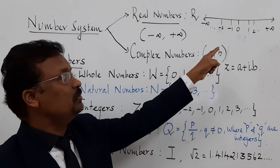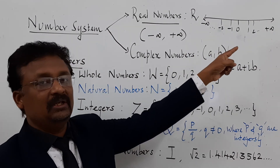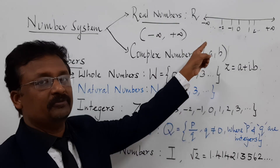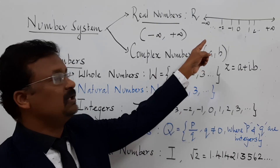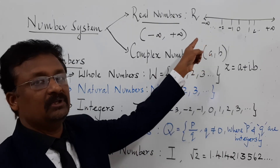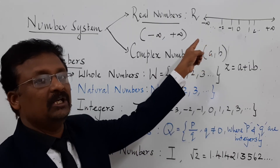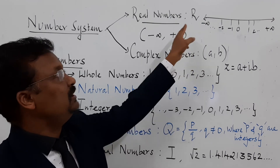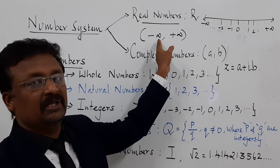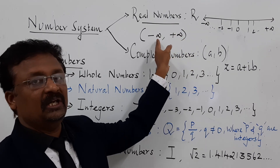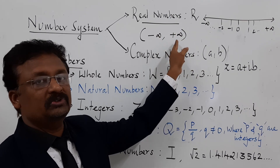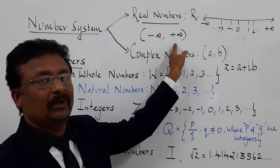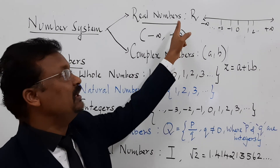On the real axis, to the right of 0 we have 1, 2, 3, 4 up to positive infinity, and to the left of 0 we have negative 1, negative 2, negative 3 up to negative infinity. So any number lying between negative infinity to positive infinity we call it as real numbers.